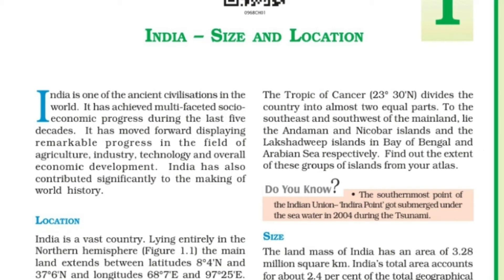The Tropic of Cancer is located near the north. In the Southern Hemisphere, we have the Tropic of Capricorn. The equator represents zero-degree latitude.